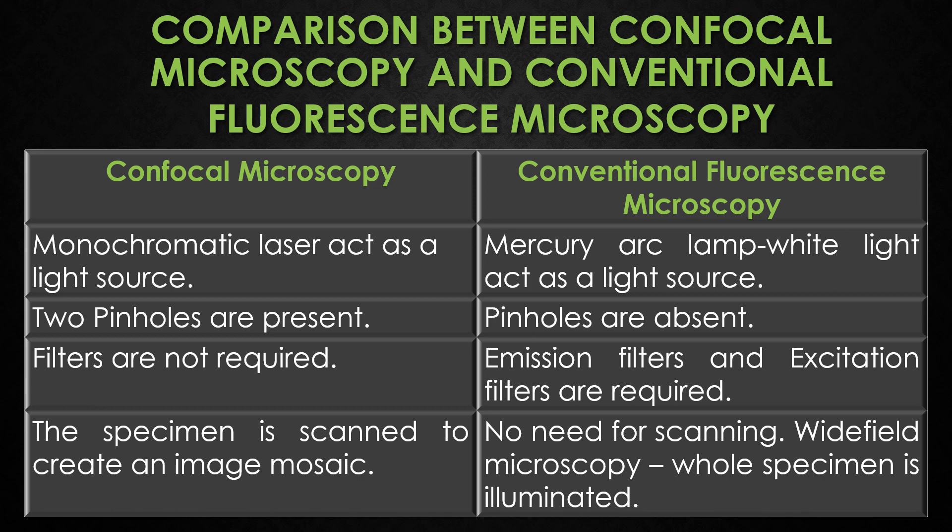Comparing confocal microscopy with conventional fluorescence microscopy: in confocal microscopy, a monochromatic laser acts as the light source, whereas in fluorescence microscopy a mercury arc lamp or white light is used. Pinholes are present in the confocal microscope but absent in the fluorescence microscope. Filters are not required for the confocal microscope, but the fluorescence microscope requires emission and excitation filters. In confocal microscopy the specimen is scanned to create a mosaic image, but in conventional fluorescence microscopy the whole specimen is illuminated.